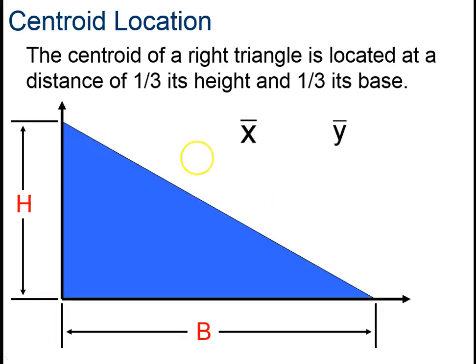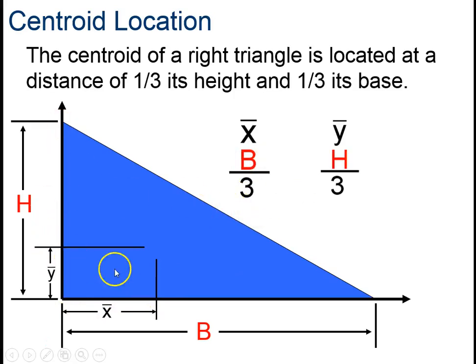For a triangle, for a right triangle, it's a third of the way over. So a third of the way over this way, and a third of the way over that way. Always remember that this is measuring from where the right angle is.